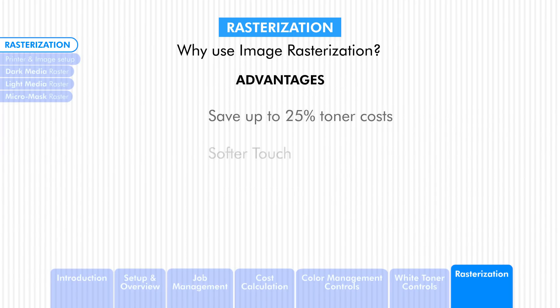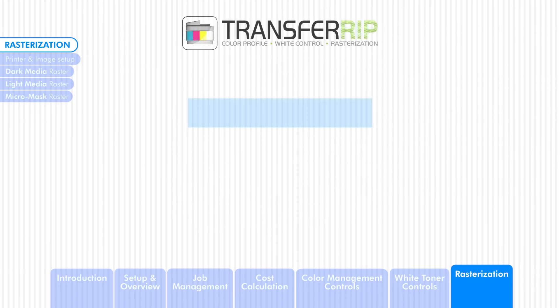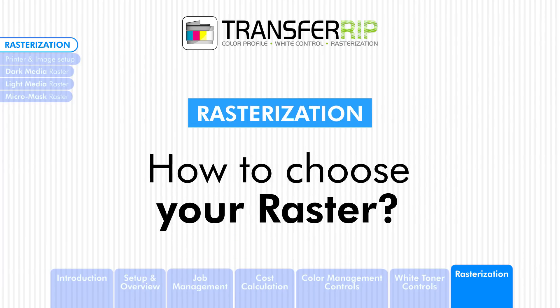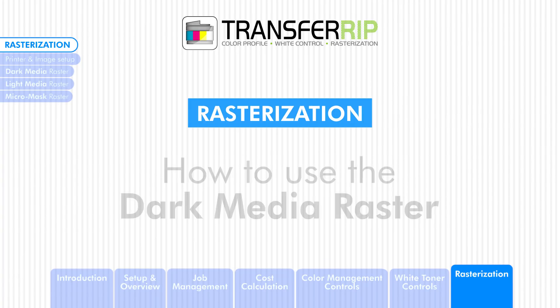Rasterized images not only save toner and provide a softer touch with increased washability, but the end result produces a unique look that other heat transfer papers cannot do. We have three ways to rasterize images within the Transfer RIP. The first and main raster option is the dark media raster.